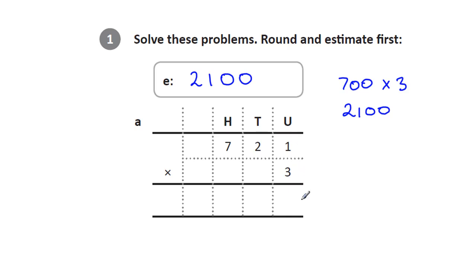And off we go. Three ones are 3. Three twos are 6. And three sevens are 21. 2163, which isn't a lot different to what we had before. So we'll tick that off.